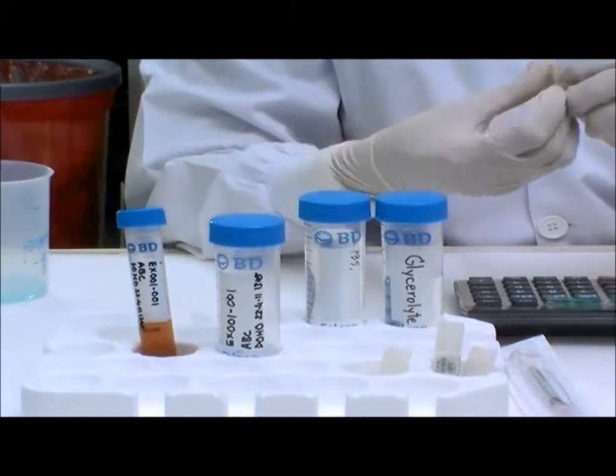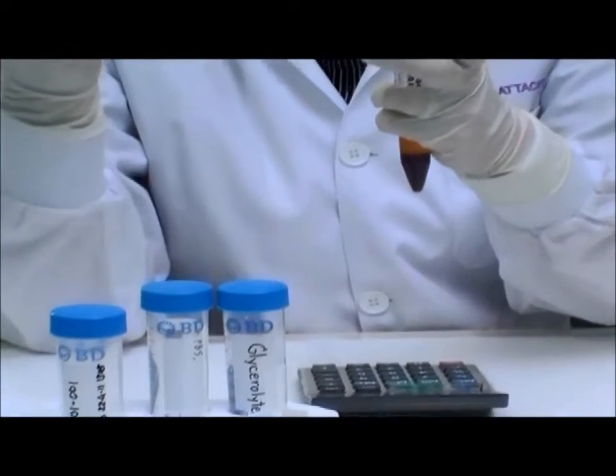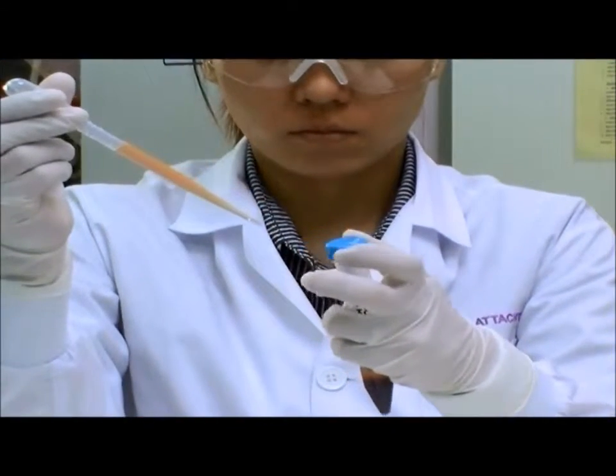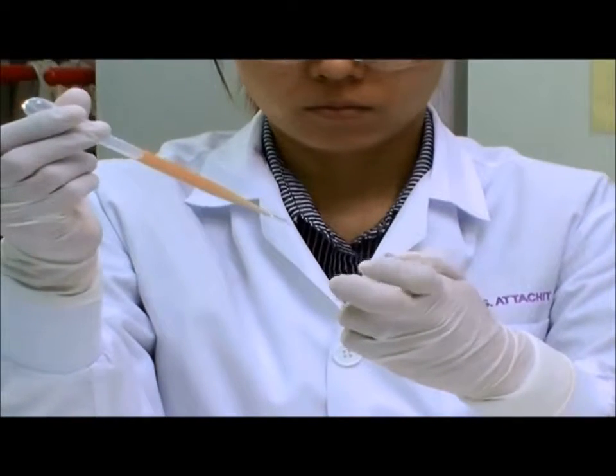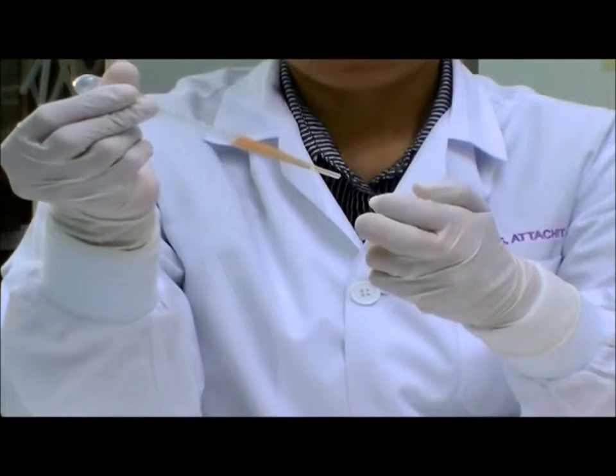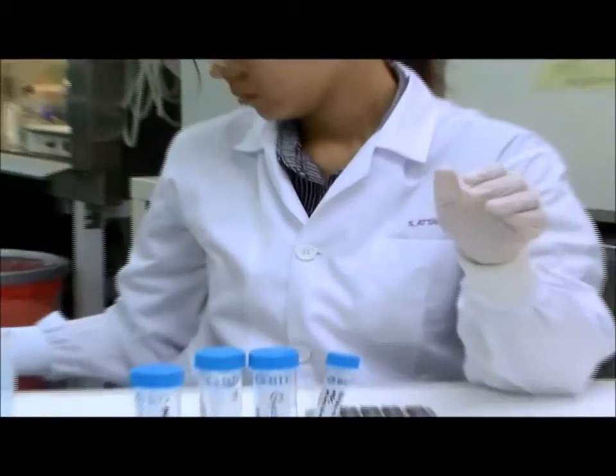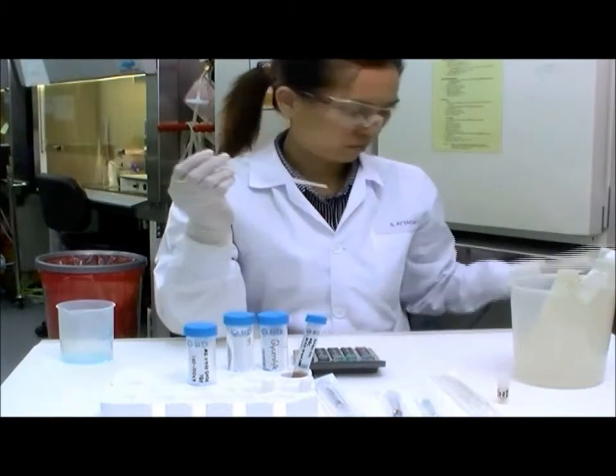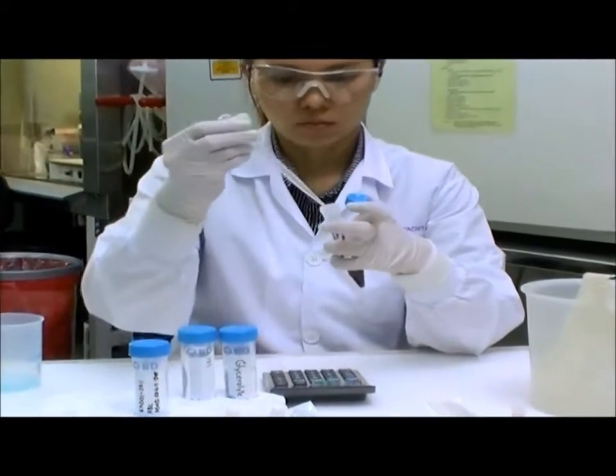After centrifugation, transfer approximately 1.5 ml of the plasma into a labeled cryovial and store in liquid nitrogen. Discard any remaining plasma along with the buffy coat.